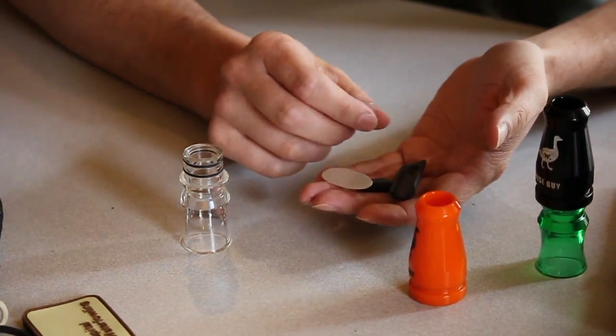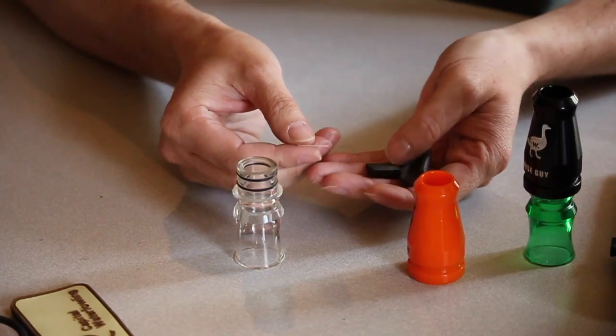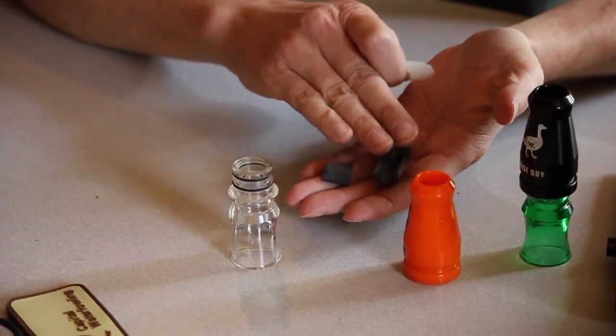Okay, so you've got five basic parts of your goose call. You've got your insert, your barrel, your reed, the wedge, and your soundboard.